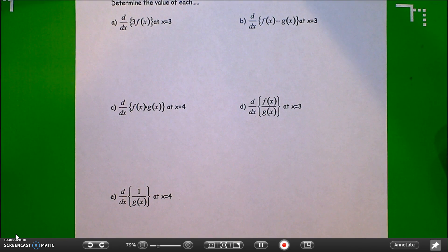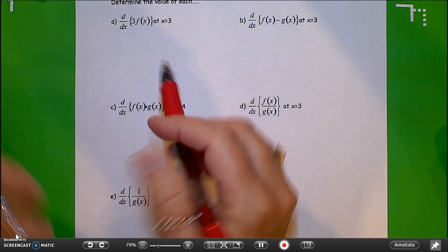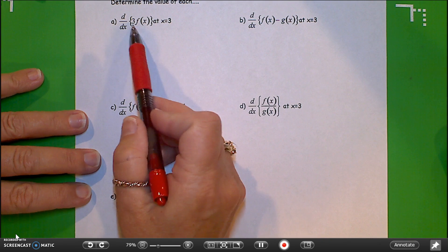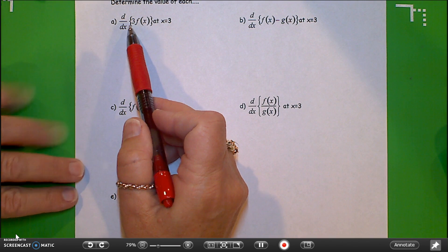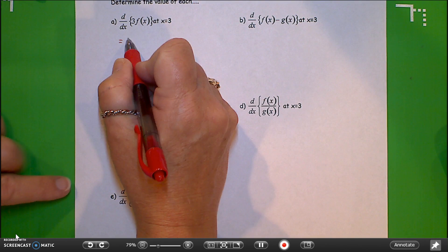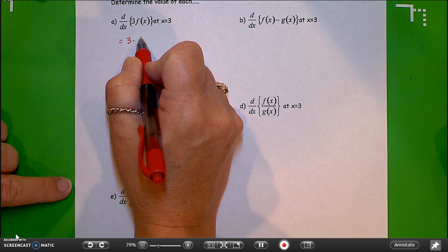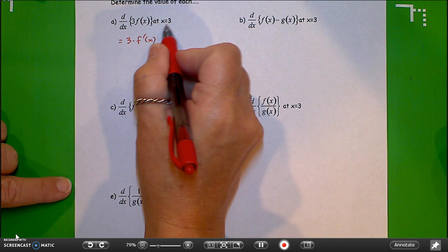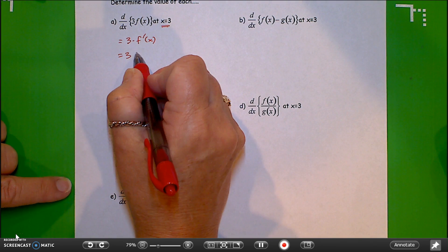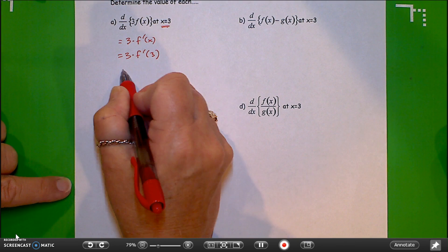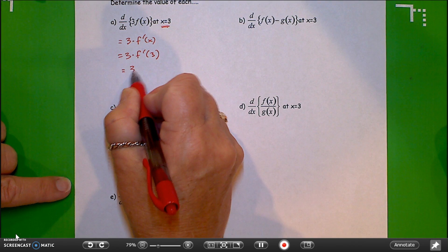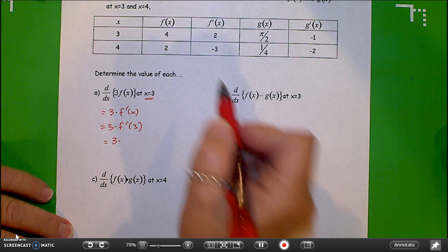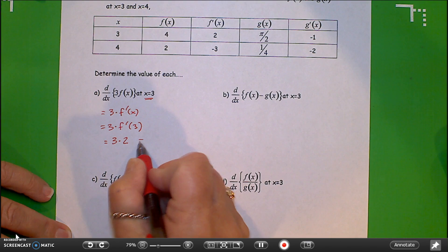So what we'll do here, let's start with a. We need the derivative of 3 times f of x. We actually looked at this before. This is basically the constant multiple rule. This is just going to equal 3 times the derivative of the function, so 3 times f prime of x. And we want to evaluate it at x equals 3, so we could write this as 3 times f prime at 3. And then just substitution, 3 times f prime at 3, looking at the top, is equal to 2. So this evaluates to 6.